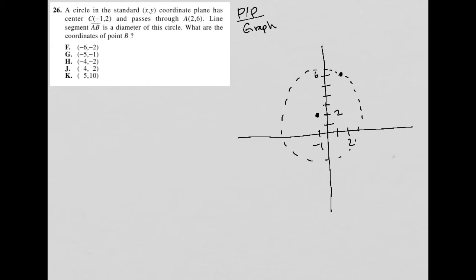Then it says line segment AB is a diameter of this circle. It doesn't tell me where A or B is, but I know that I have a line segment AB as a diameter. What are the coordinates of B?